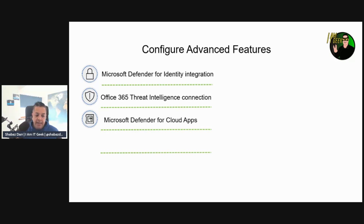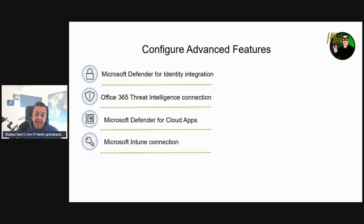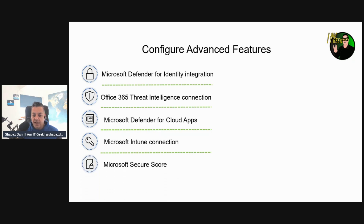Shadow IT itself is not desirable, but being able to detect it so you can mitigate and stop it is important. The Microsoft Intune connection enables sharing of device information and enhanced policy enforcement. Finally, the Microsoft Secure Score advanced feature follows Defender for Endpoint signals, giving Microsoft Secure Score visibility into device security posture.